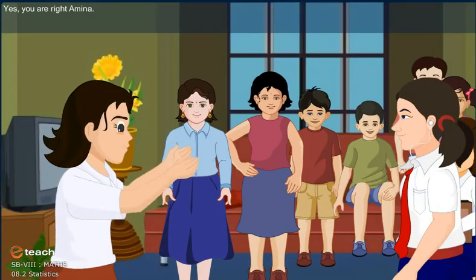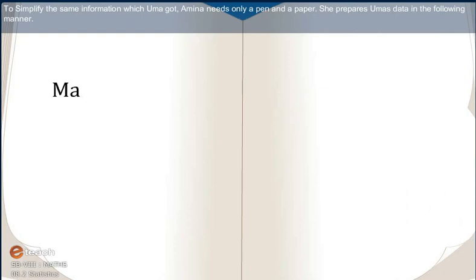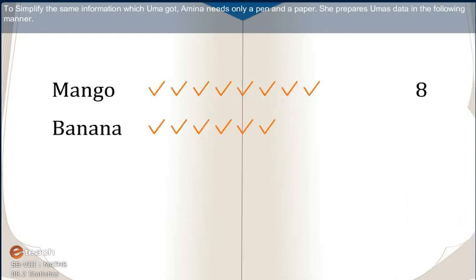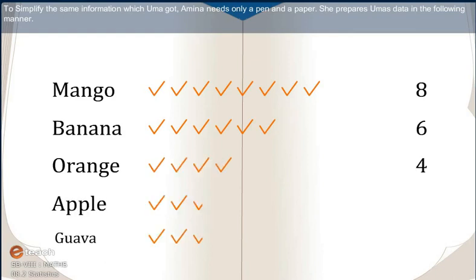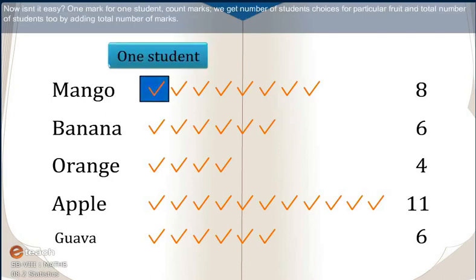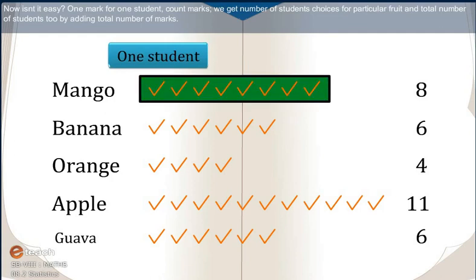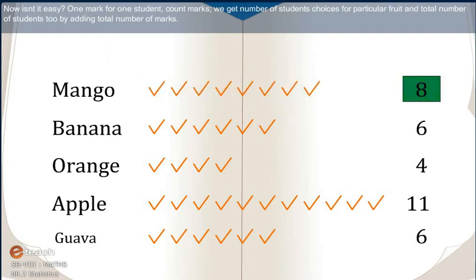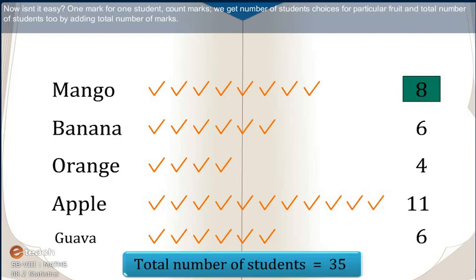Yes, you are right, Ameena. To simplify the same information which Uma got, Ameena needs only a pen and a paper. She prepares Uma's data in the following manner. Now isn't it easy? One mark for one student. Count the marks and we get the number of students, choices for a particular fruit, and the total number of students too, by adding the total number of marks.